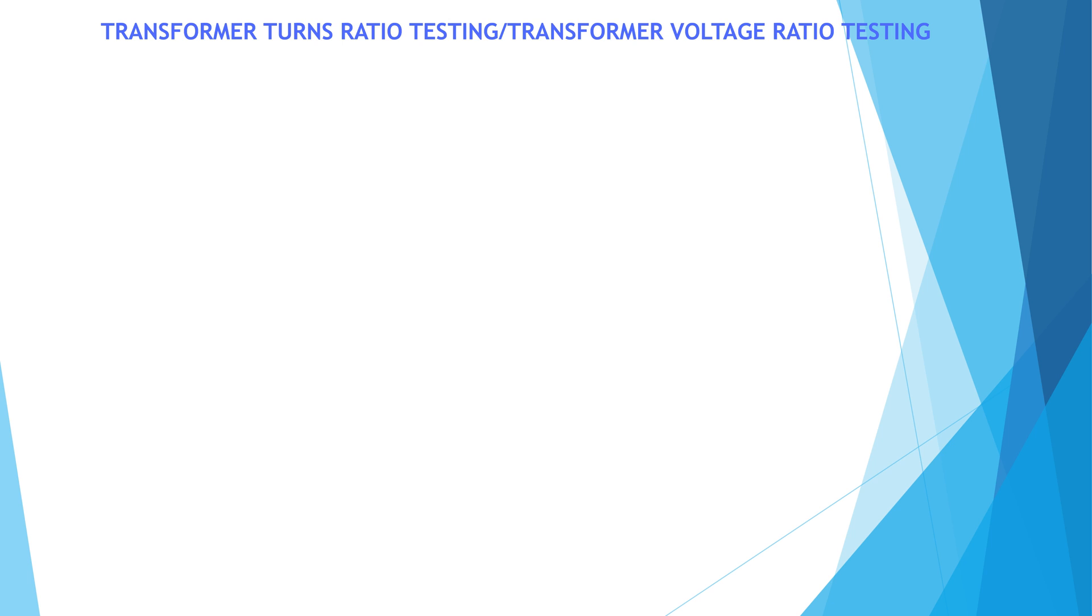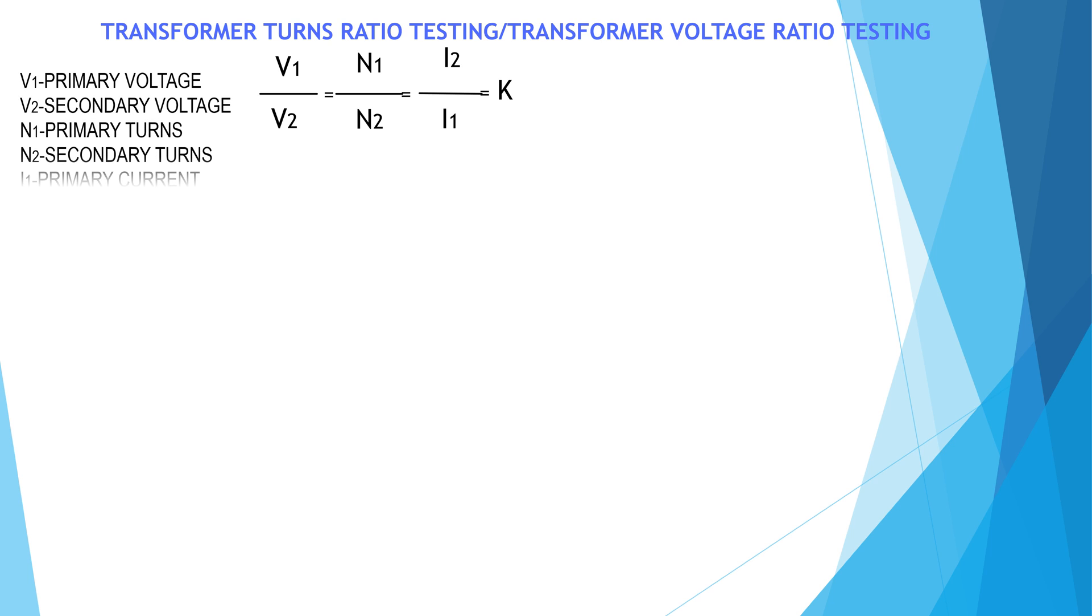What is turns ratio? We know the expression V1 by V2 is equal to N1 by N2 is equal to I2 by I1 is equal to K. K is the transformation or turns ratio. Here V1 is primary voltage, V2 is secondary voltage, N1 is number of turns in primary side, N2 is number of turns in secondary winding, I2 is secondary current, I1 is primary current.